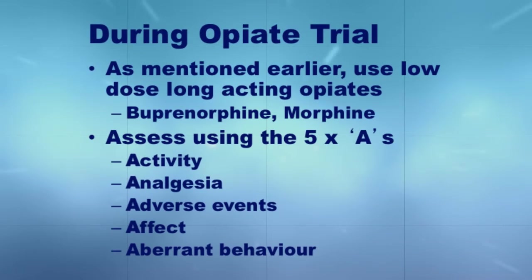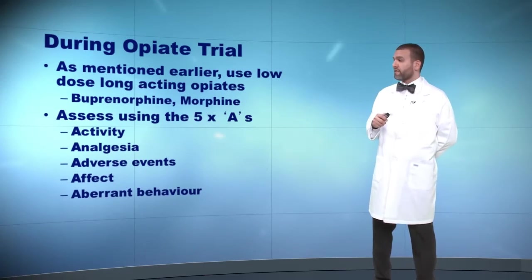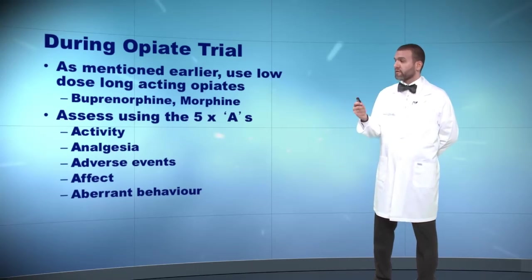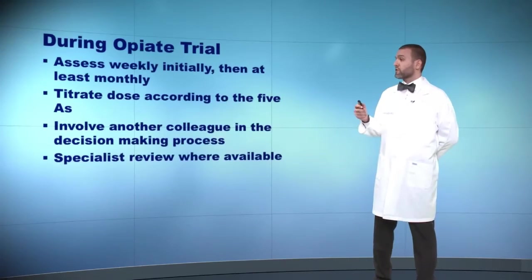During the opioid trial in chronic non-cancer pain, as I mentioned earlier, you have to use a low-dose, short-acting or long-acting opioid. You have to assess the 5As: activity, analgesia, adverse effects, and the effect on apparent drug-seeking behavior.